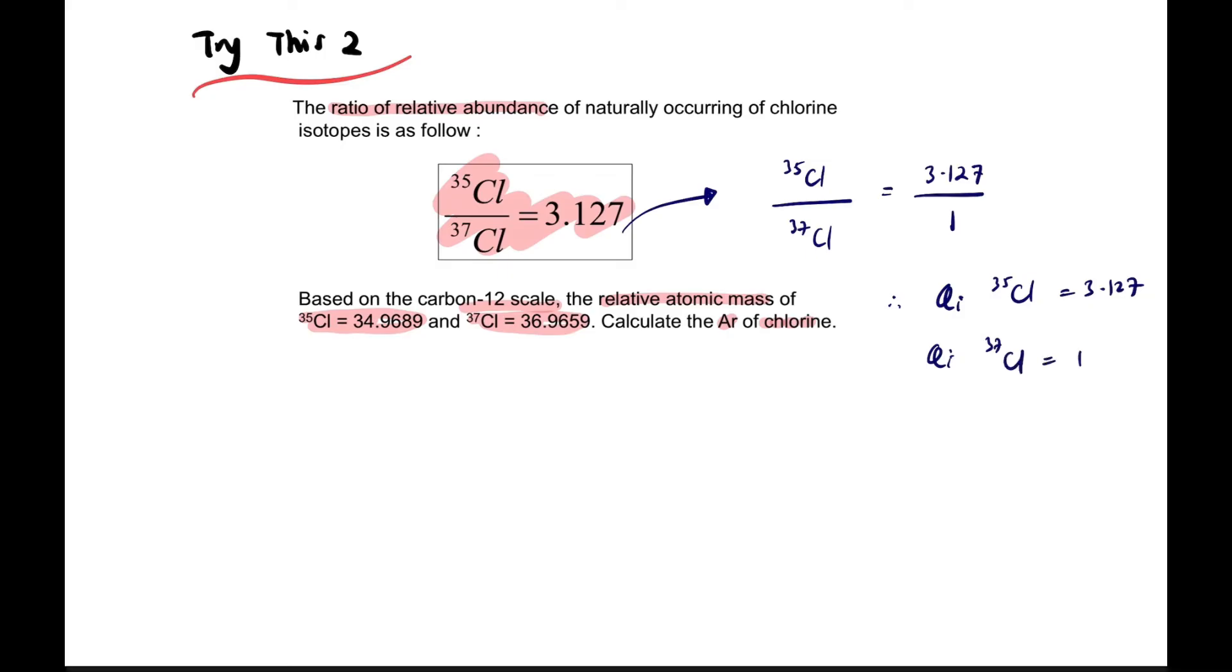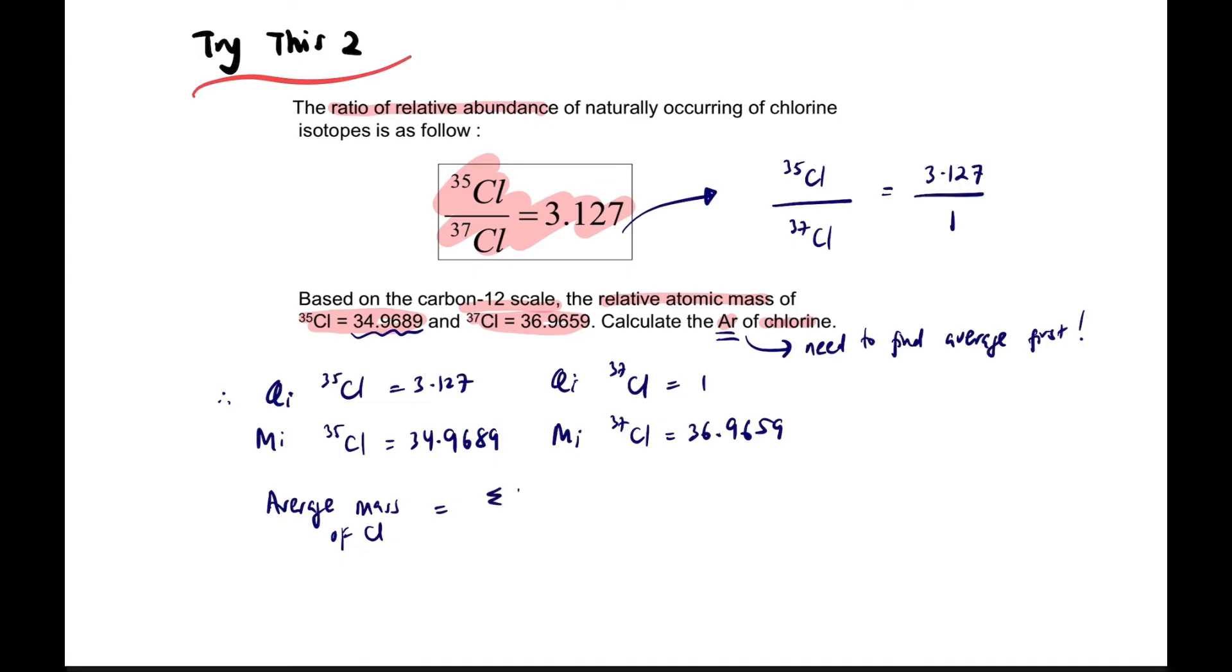When they give a ratio like this, it means per one. So the abundance q for Cl-35 is 3.127 and for Cl-37 is 1. The mass for Cl-35 is 34.9669 and for Cl-37 is 36.9659. Now to find Ar for chlorine, we first need to find the average. Write the formula: average mass of chlorine equals sum qi mi over sum qi.